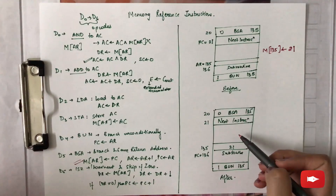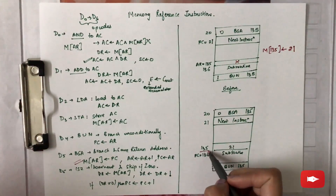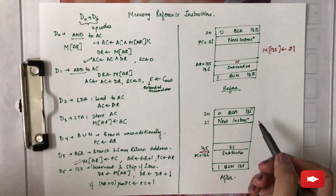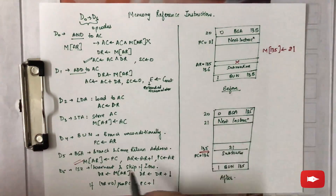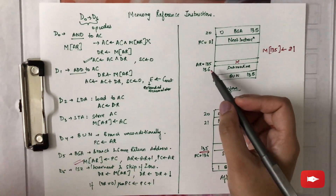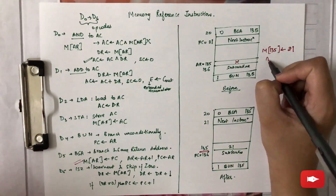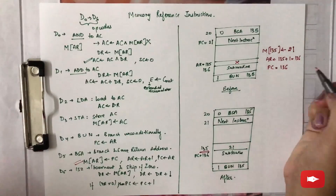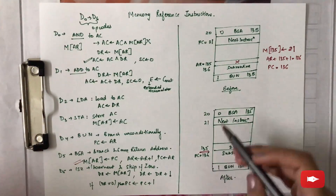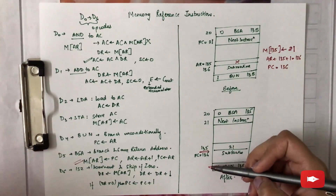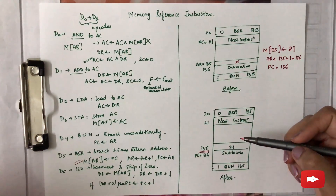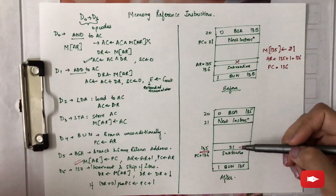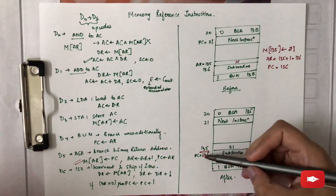After execution of the instruction, the value of PC which is 21 is stored at memory location 135. This means you need to return to address 21 after the completion of your subroutine. Then AR's value is incremented by one, making it 136, and that value 136 is transferred to PC. So the return address 21 is stored in memory location 135, and control continues with the subroutine starting from address 136.